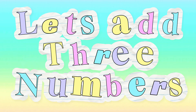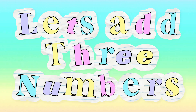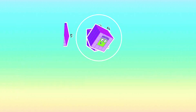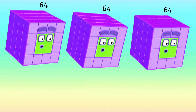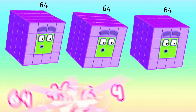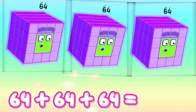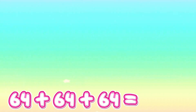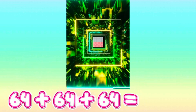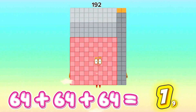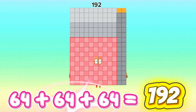Let's talk about numbers. 64 plus 64 plus 64 is equals to 192.